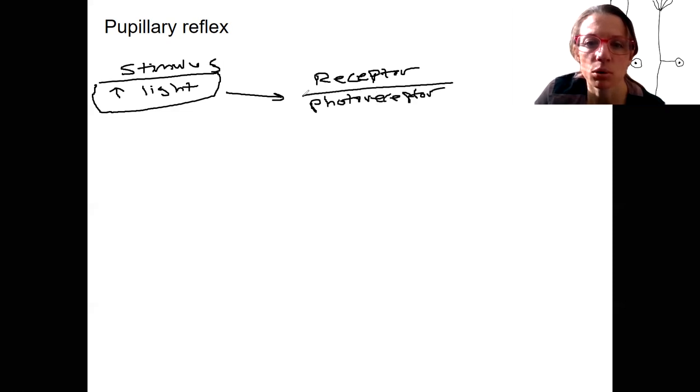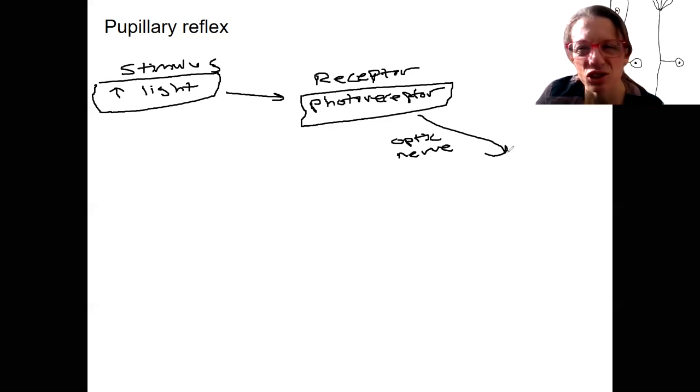Now, photoreceptors actually talk to bipolar cells, then ganglion cells. We are just going to have that be called the optic nerve. Those are the axons of the ganglion cells that are the input signal to the brain. This is actually going to go to the thalamus. It does travel to the thalamus. It's also going to travel to the midbrain, where there are cranial nerve nuclei. This is our integrator.